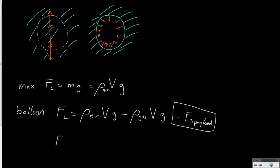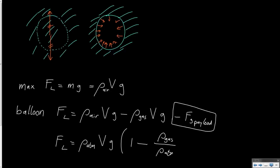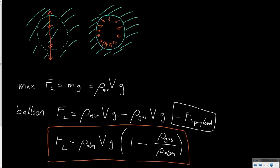I can also write this another way: the lift force is rho_atmosphere times V times g times (1 minus rho_gas divided by rho_atmosphere). This is, in its generic form, the equation which governs the lift of balloons — both hot air as well as gas balloons.